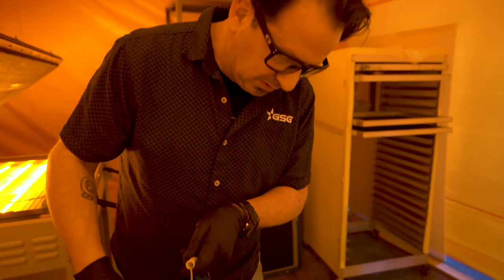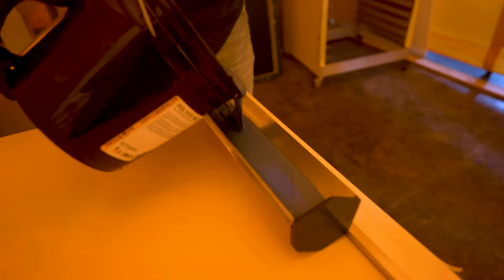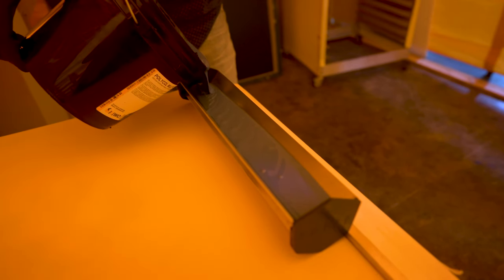First thing we're going to do is pour our emulsion into our scoop coater. We're using Kiwo Multitex Blue, which is a pure photopolymer emulsion. No need for diazo, it's ready to use right out of the bucket.